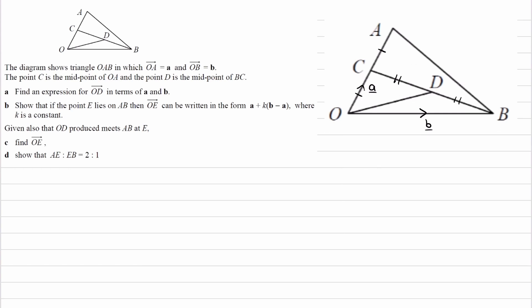The first part of the question is asking us to work out what OD is. So OD we can write as OC plus CD. That's one path that we can take from O to D. Let's work out what each of these things are now. OC is just going to be a half of OA, as C cuts it in half, and that will just be a half of A.